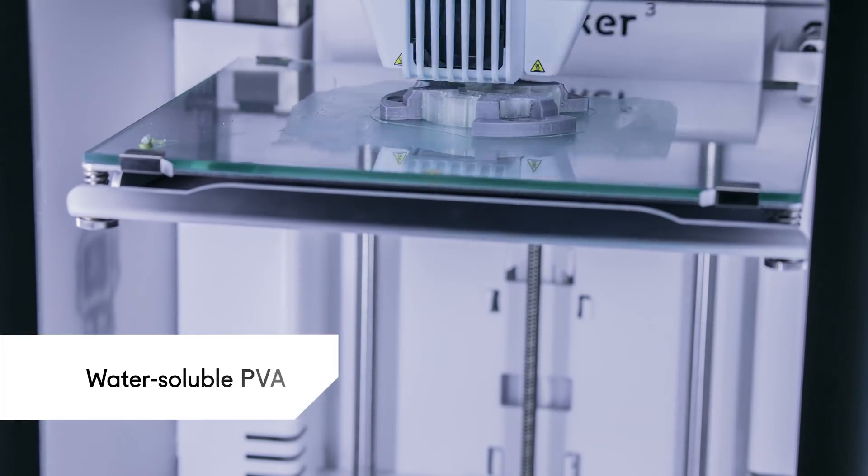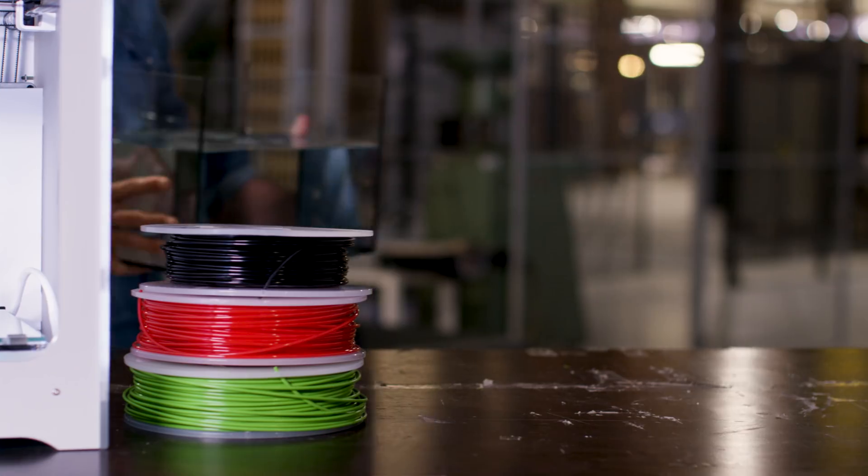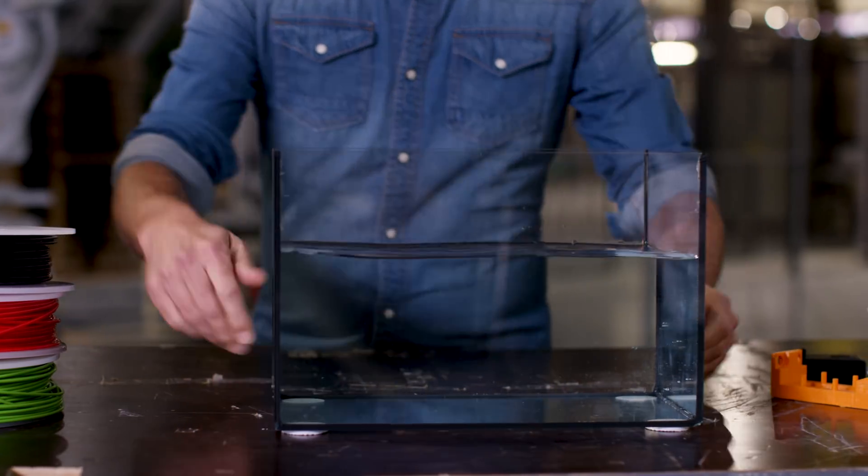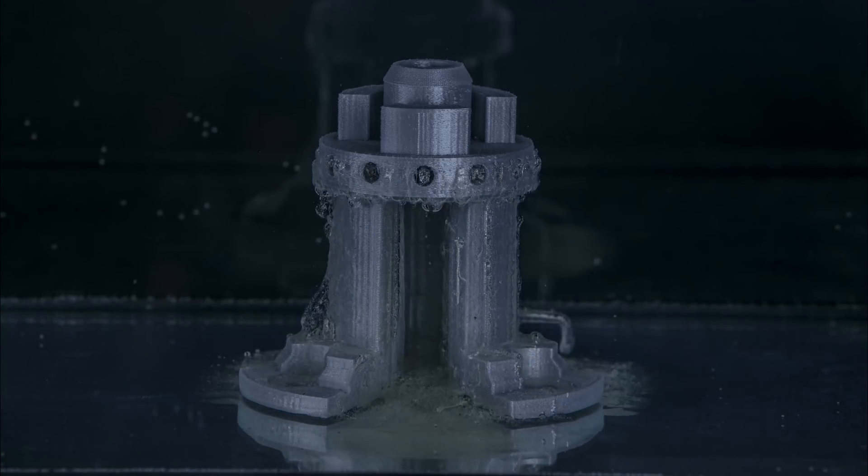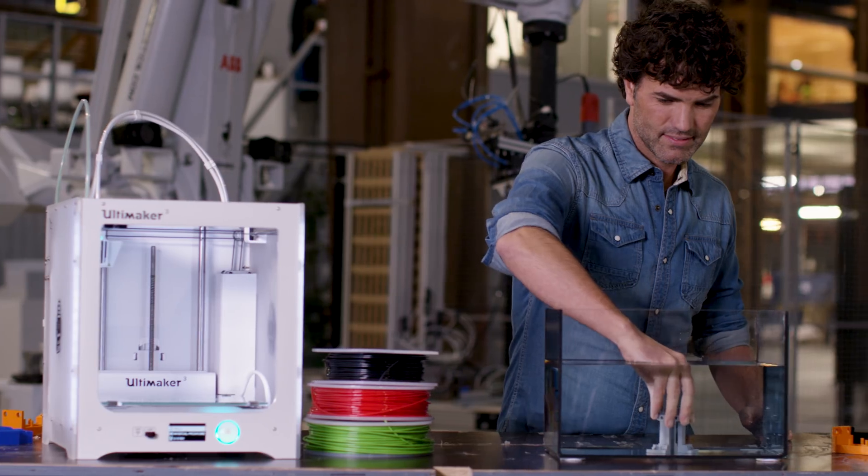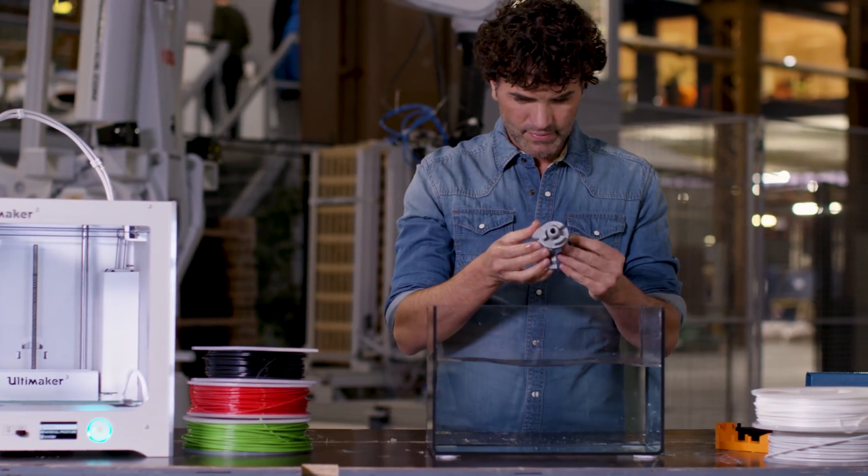Choose PVA if your model has tiny details which need support, or hard-to-reach cavities. Removing PVA support material is effortless. Simply place the print in tap water and it will dissolve gradually. This may take several hours. PVA is compatible with PLA, CPE, and Nylon.